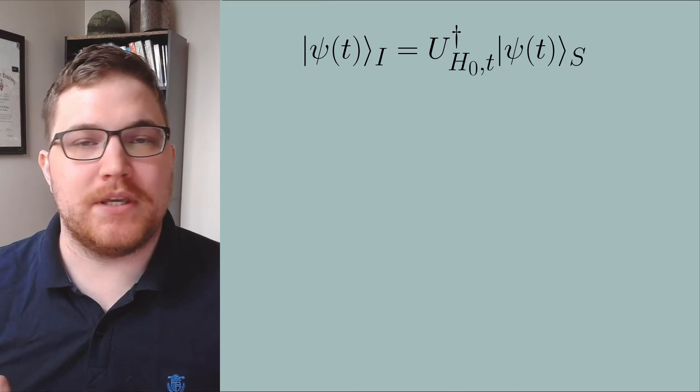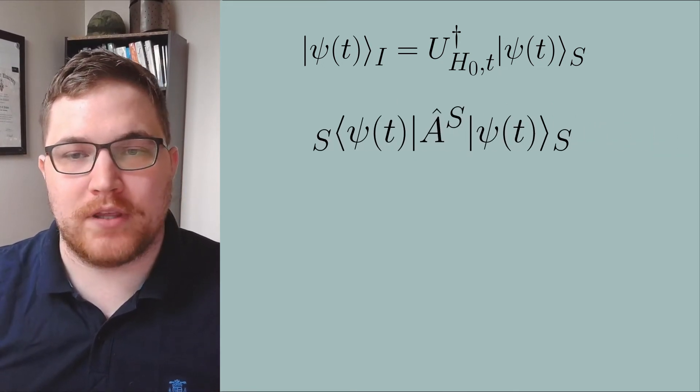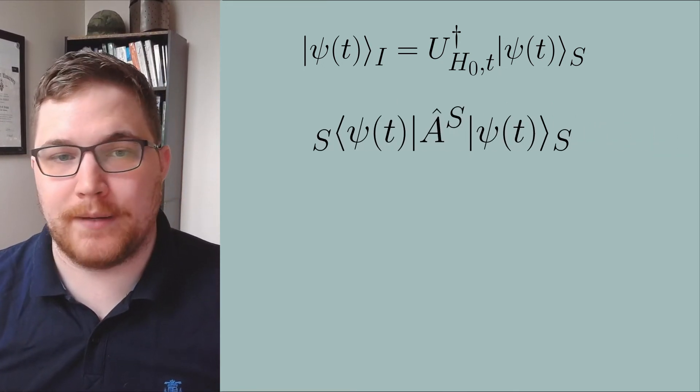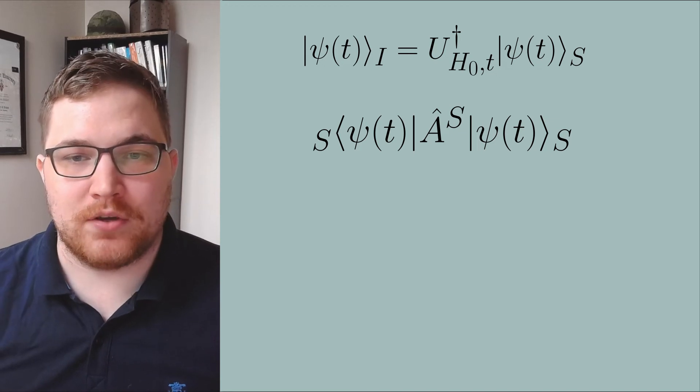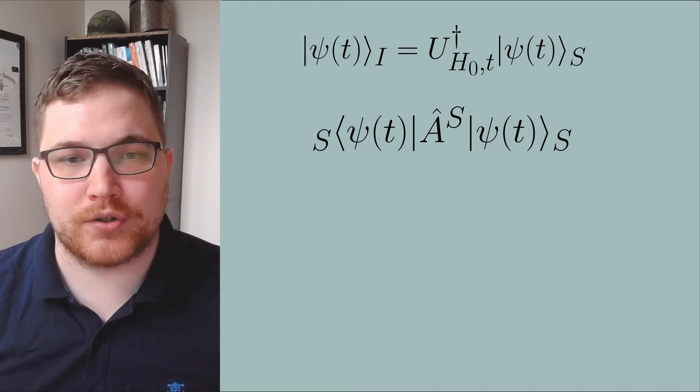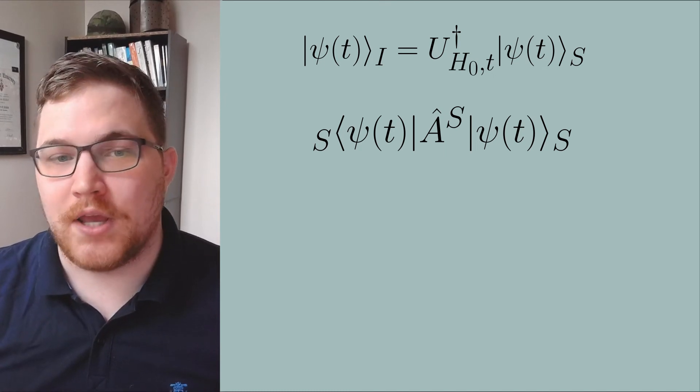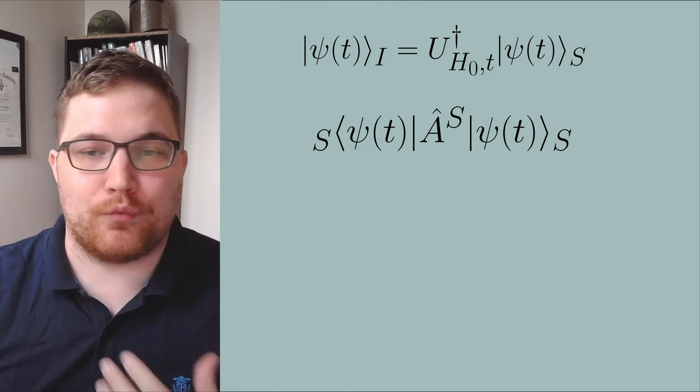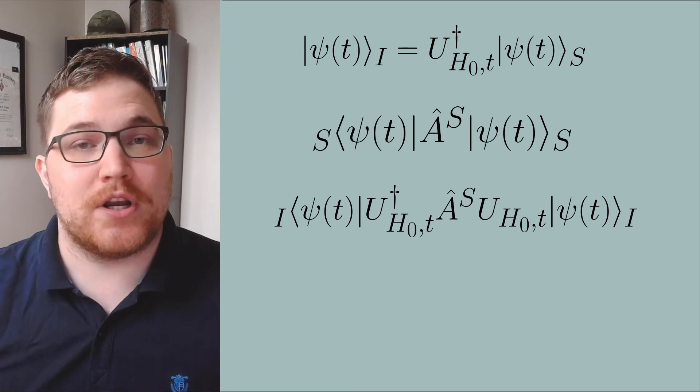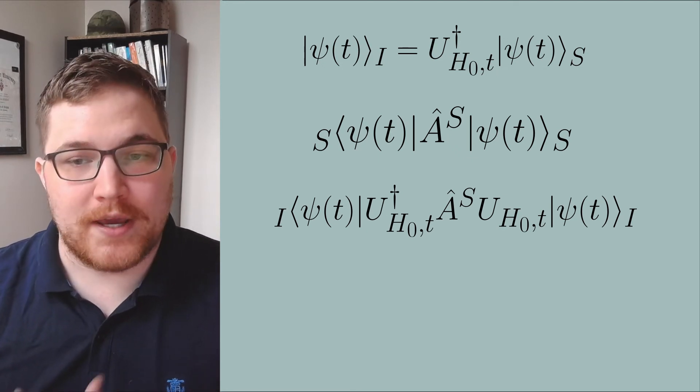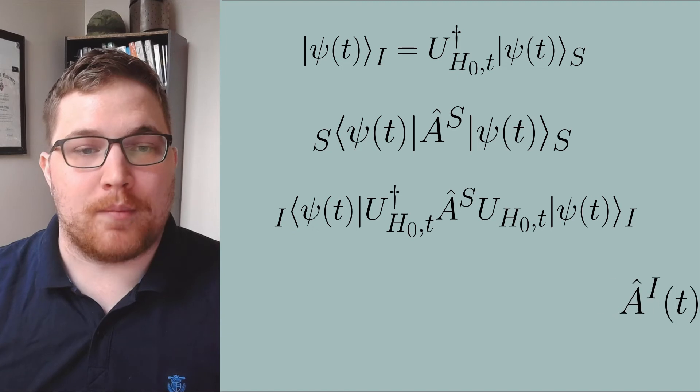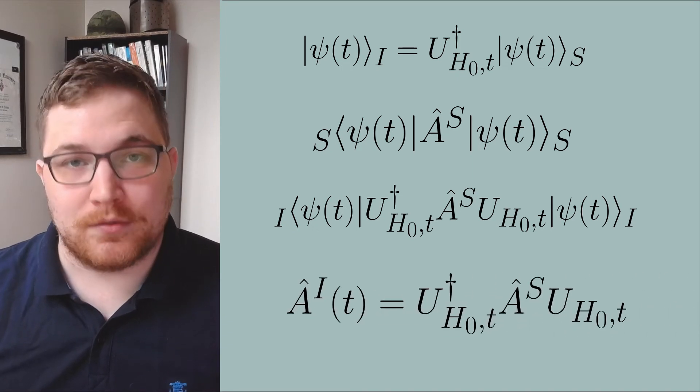With this definition, we can zero in on how the observable evolves in time. Tracking the expectation value of the observable in the Schrödinger picture and using the fact that the time evolution operator is unitary, we see that we can wrap the time evolution generated by the free Hamiltonian around the operator to get the operator in the interaction picture.